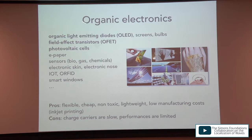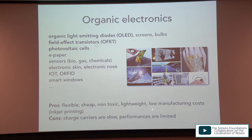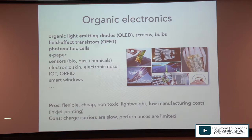You cannot just try all these molecules — you need some design principle or basic understanding of what is going on. Applications include OLEDs, photovoltaic cells, field effect transistors, electronic paper, sensors, skin electronics, and radio-frequency applications. The advantage of these materials is that they are flexible, cheap, non-toxic, and can be processed at room temperature. The main bottleneck is that charge carriers are very slow.